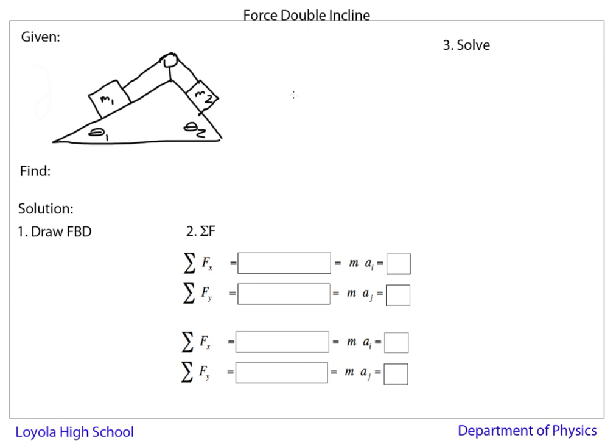I know the values of all the quantities. m1 is 3 kilograms, m2 is 2 kilograms, theta 1 is 30 degrees, and theta 2 is 60 degrees. What we need to do in this problem is to find the tension in the cable.